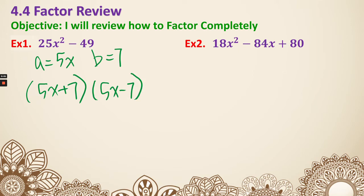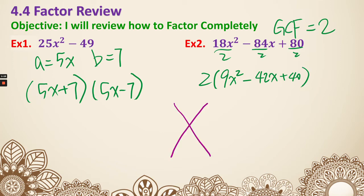Example two. You can see there's a GCF first, so the GCF for this example appears to be a 2. We're going to divide everything by 2. Don't forget to keep the 2 outside. We're going to get 9x squared minus 42x plus 40. Then we're going to do our cross method. On the top is 9 times 40, so 360. On the bottom it's negative 42, and we're going to have our fraction.